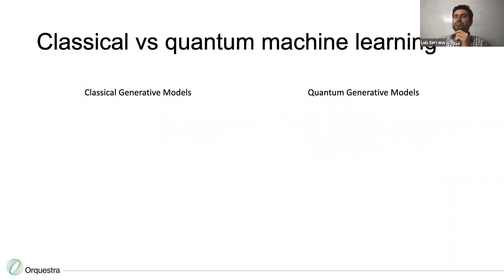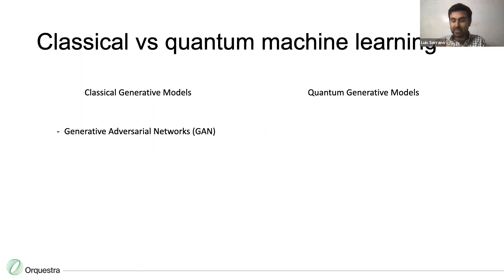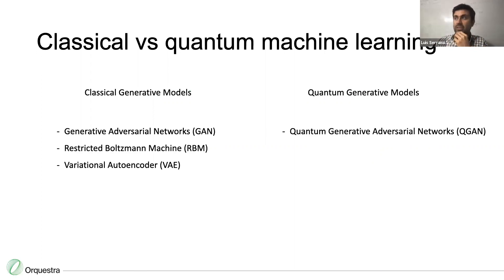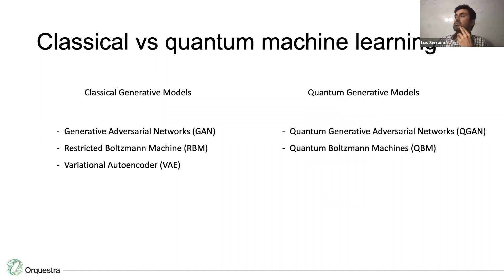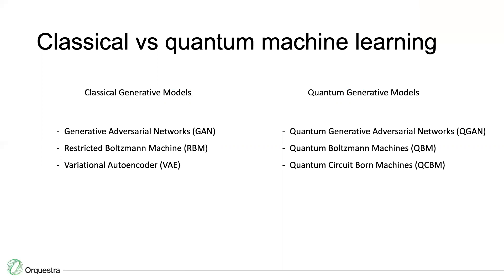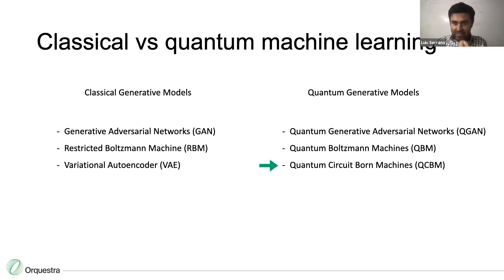There are several classical generative models — generative adversarial networks (GANs), restricted Boltzmann machines, variational autoencoders, and others. On the quantum side there are quantum analogs of each: quantum generator networks, quantum Boltzmann machines, and quantum circuit Born machines. Today I'll focus on one particular quantum generative machine learning model called the Quantum Circuit Born Machine, or QCBM.